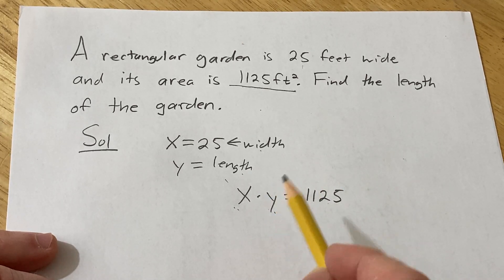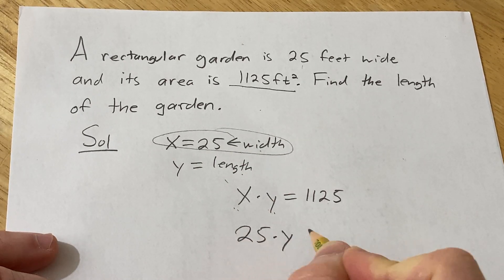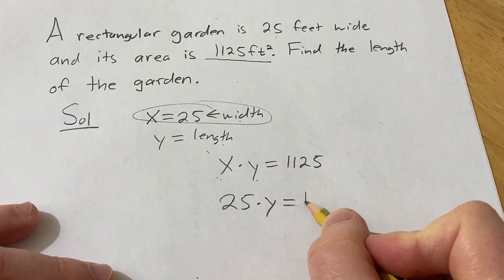The really easy thing about this problem is that we already have the width. So this is 25 times y equals 1,125.